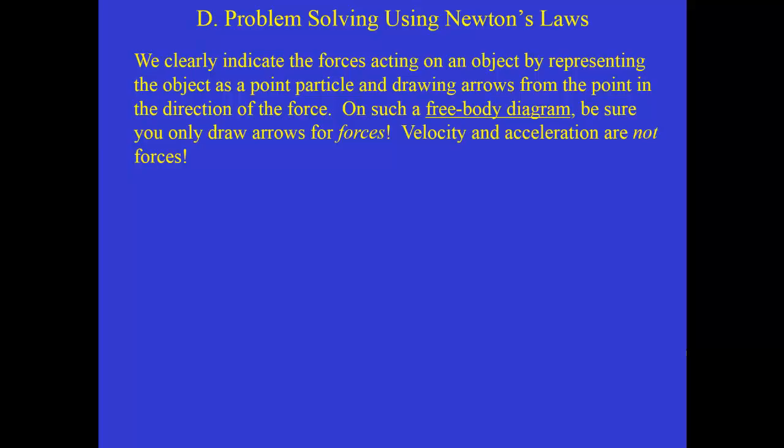We clearly indicate forces acting on an object by drawing the object as a point particle and then drawing all forces as arrows away from the point in the direction of the force. We call this a free body diagram. Be careful on free body diagrams that you only draw arrows for true forces. Forces always are the kinds of influences where we can write that the force is caused by one agent acting on another agent. Note that velocity and acceleration are not forces.